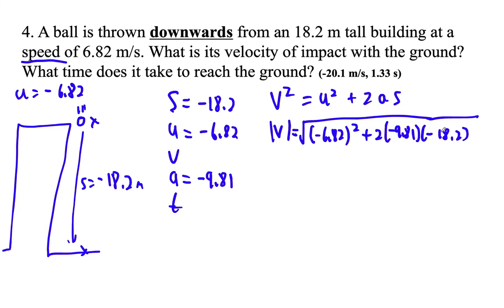So I'm doing the square root, left parenthesis, negative 6.82, right parenthesis squared. Plus 2 times negative 9.81 times negative 18.2. And I get that the absolute value of that final velocity is 20.0897 meters per second.